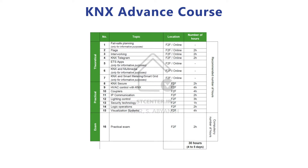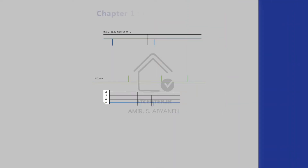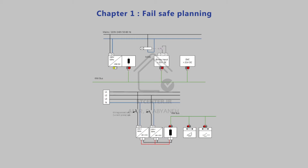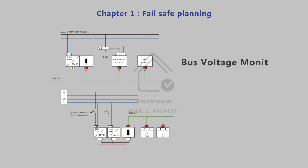At ST Center, we are going to provide you more information on the optional chapters as well, because they are so important. The first chapter is fail-safe planning. It is an optional chapter, but we are going to cover it because it is so important. You will learn about fail-safe planning in the design phase of your project, so you can design special KNX projects that will be totally safe. In this chapter, you will learn about bus voltage monitoring, redundant power supply, implementing the weather station in safe planning, and many other things.